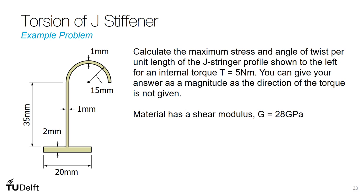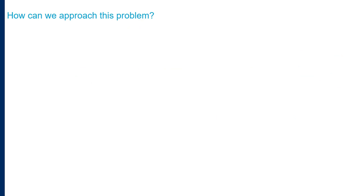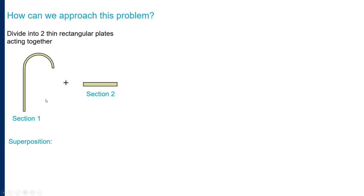So let's look at how we can approach this problem. First we have to take into consideration that the J-stiffener profile contains sections with different thicknesses. So we need to divide this profile into two thin rectangular plates with constant thicknesses that can act together. Because we are dividing it up, the total torque still has to equal our internal torque of 5 Newton meters. So T = T1 + T2, and we'll call this equation I.